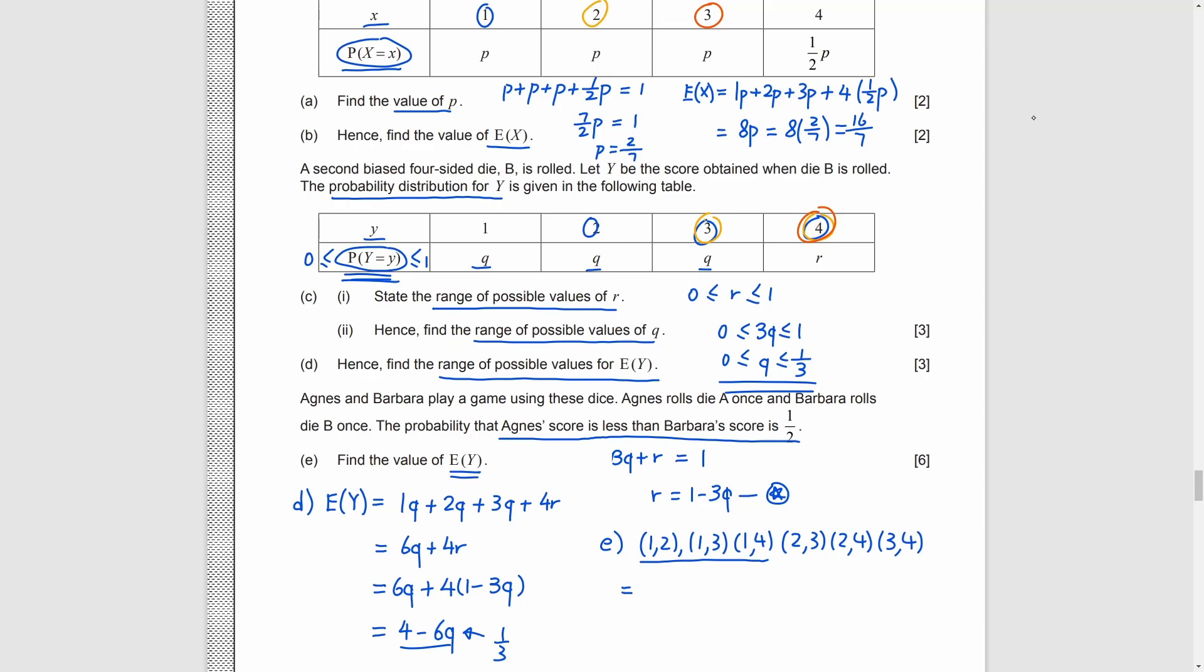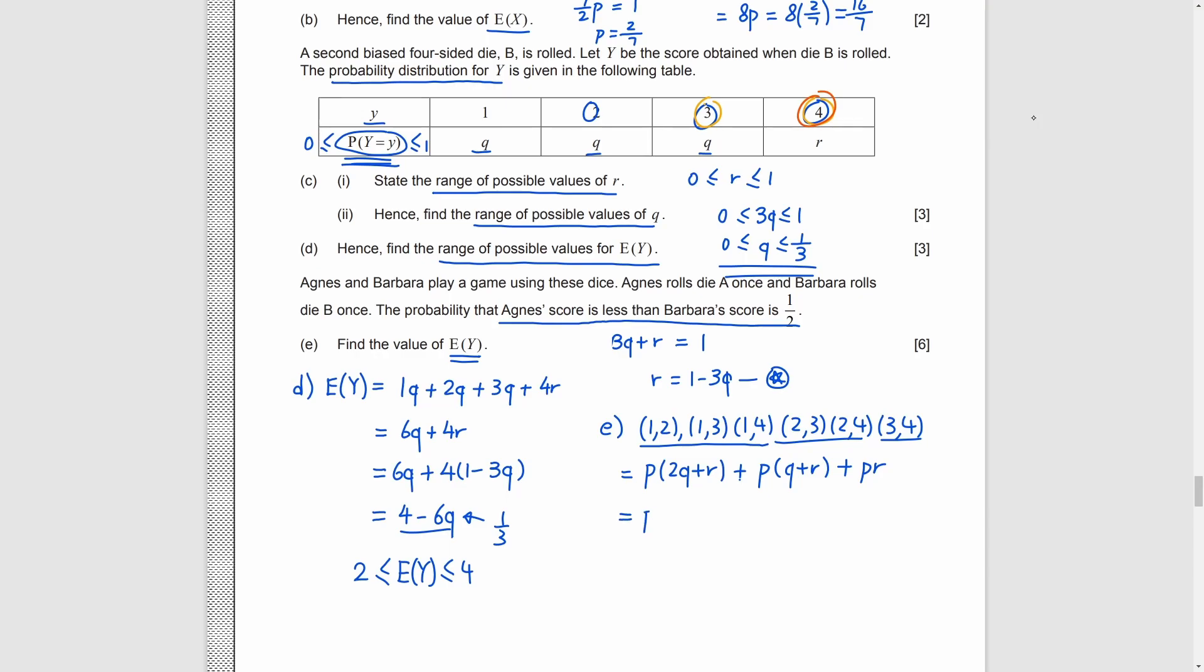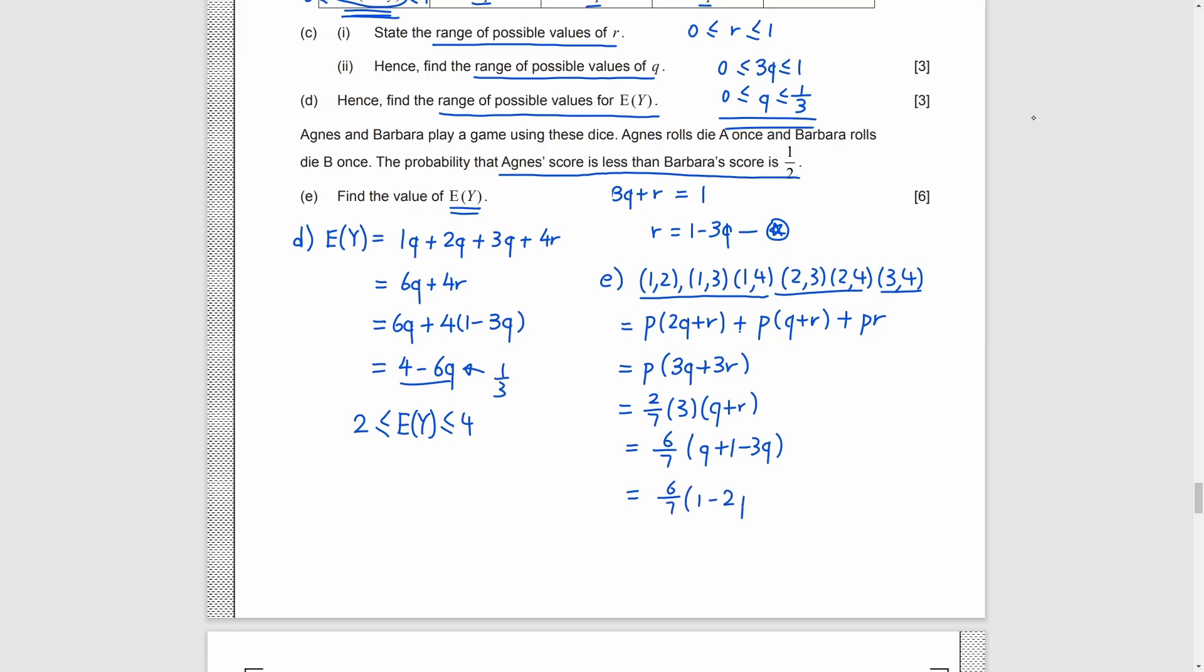For example, a guess 1 score, the probability is p. For b guess 2, 3, 4, the probability is 2p plus r. Then, we multiply them. And, we consider the other situations as well. Finally, we get p times 3q plus 3r. As we know, p is 2 over 7. And, r is 1 minus 3q. Finally, we can get 6 over 7 times 1 minus 2q.